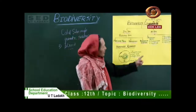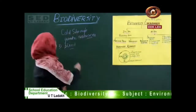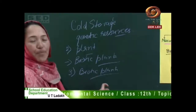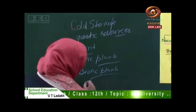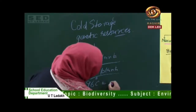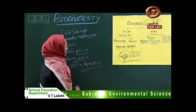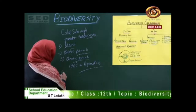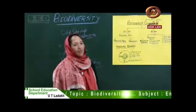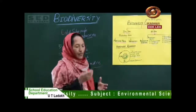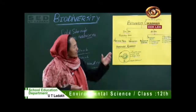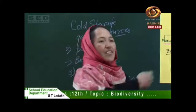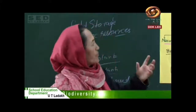The third method is cryo-preservation, which means preservation of biotic material at a very low temperature of minus 196 degrees Celsius in liquid nitrogen. The fourth method is captive breeding, where endangered species are kept under controlled conditions, bred in zoological parks, and then released back into their natural habitat. This is how we conserve biodiversity at different levels.